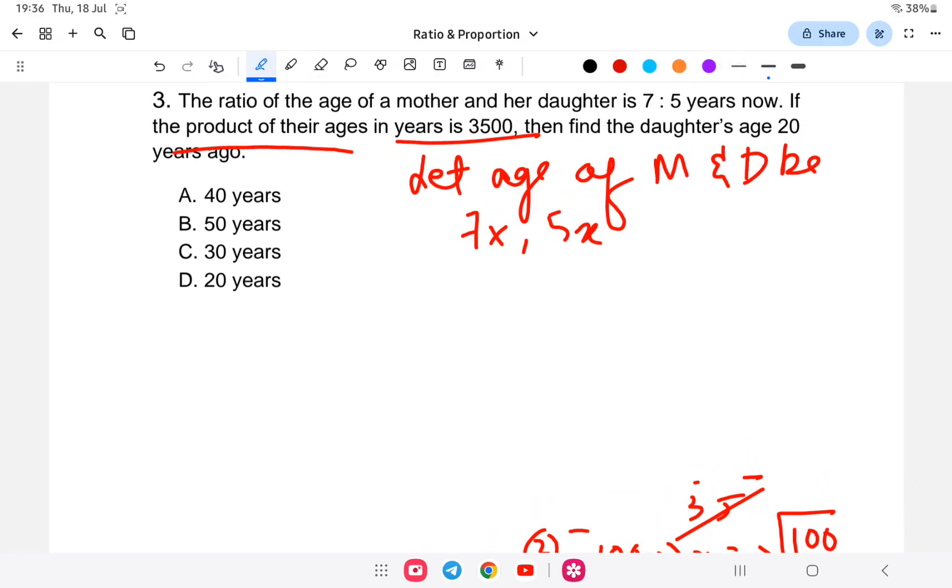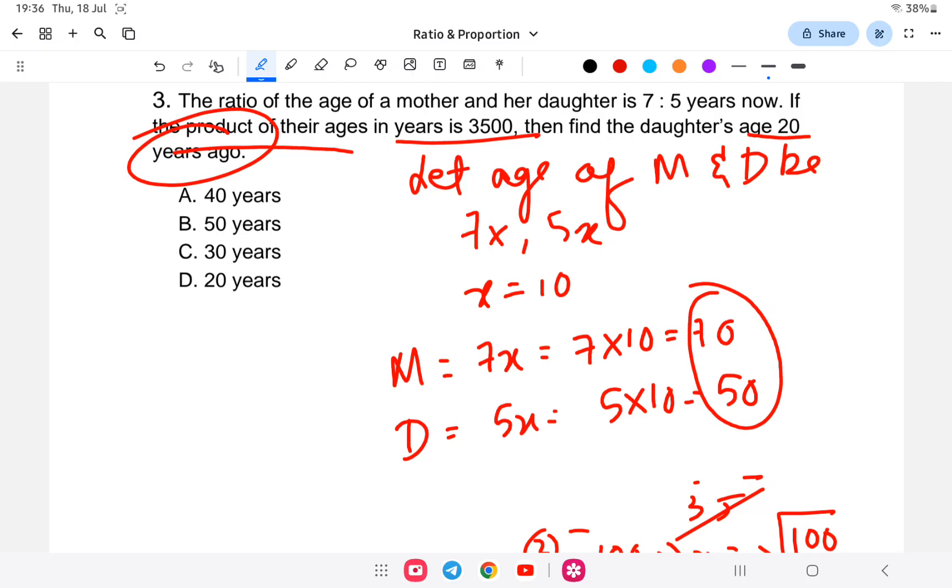So x value is 10. Mother's age is 7x = 7 × 10 = 70 years. Daughter's present age is 5x = 5 × 10 = 50 years. The question asks for daughter's age 20 years ago, so 50 - 20 = 30 years. So the answer is C, 30 years old. I hope you got it.